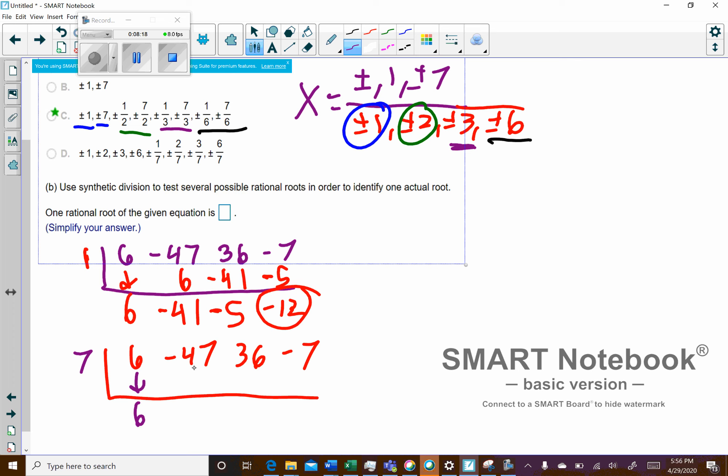So let's see. We'll drop down the 6. 6 times 7 is 42. That adds up to negative 5. Negative 5 times 7 is going to be negative 35. That adds up to a 1. 1 times 7 is 7. Positive 7. So there we go. We get 0 as our remainder.